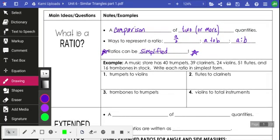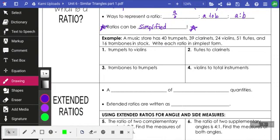Alright, so here we are going to do some examples. We have a music store. It has 40 trumpets and 39 clarinets, 24 violins, 51 flutes, and 16 trombones in stock. Write each ratio in simplest form. Trumpets to violins, and the order matters, so trumpets is the first word. I'll do 40 to 24. But the instructions do say simplest form, and so I'll reduce that, and that reduces to 5 to 3 if I divide them both by 8.